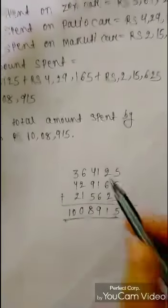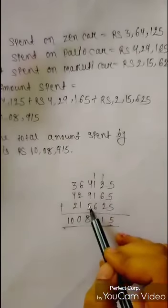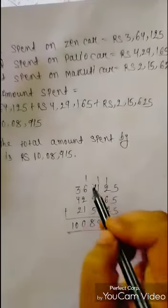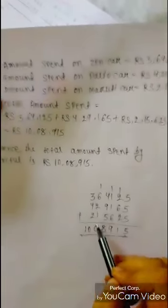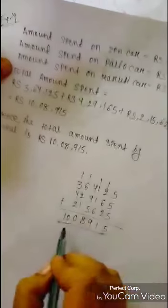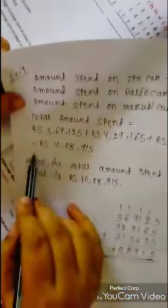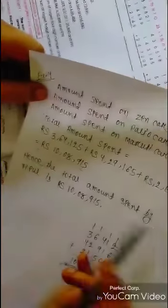Let's verify: 5 plus 5 plus 5 is 15, write 5, carry 1. 1 plus 2 plus 6 plus 2 is 11, write 1, carry 1. 1 plus 1 plus 1 is 3, 3 plus 6 is 9, then 4 plus 9 plus 5 is 18, write 8, carry 1. 1 plus 6 plus 2 plus 1 is 10, write 0, carry 1. 1 plus 3 plus 4 plus 2 is 10. So our answer is Rupees 10,08,915. Hence, the total amount spent by Vipul is Rupees 10,08,915.